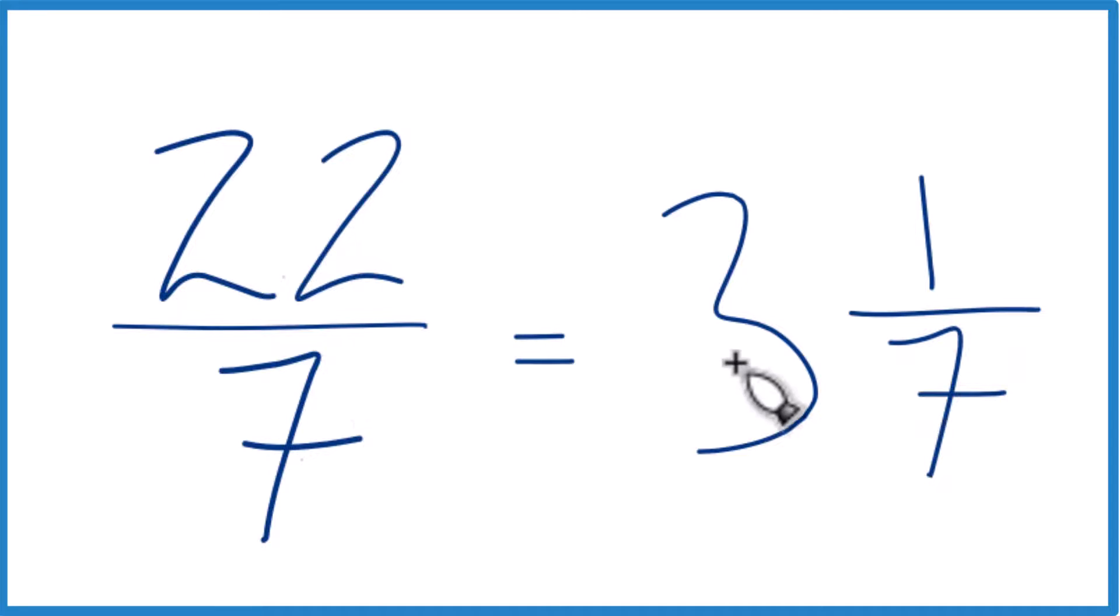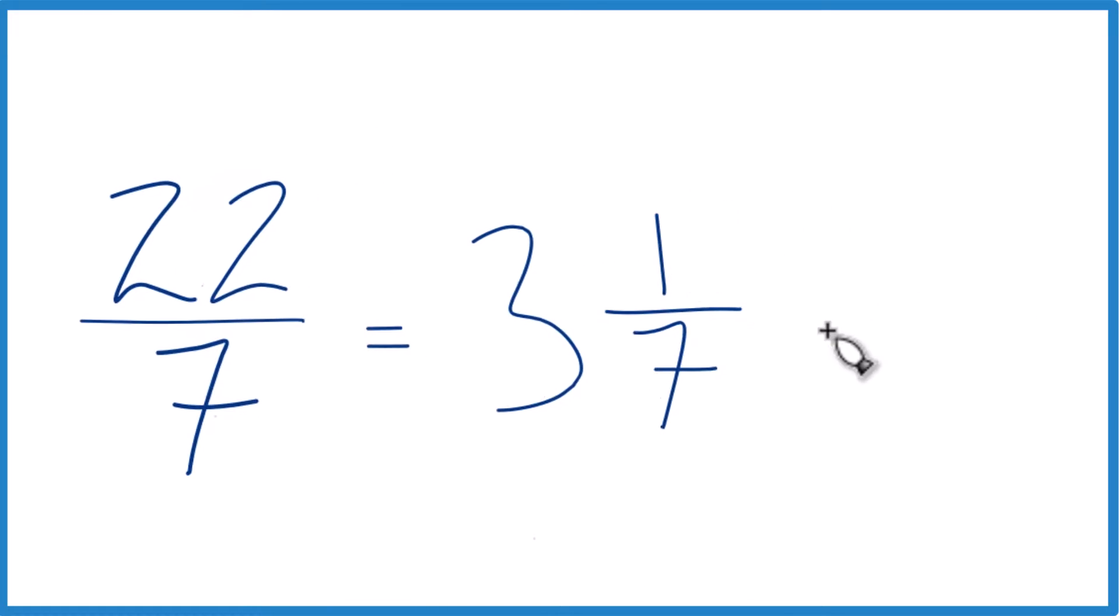Then we just bring the 7 across, and that's the mixed number. 22 sevenths equals 3 and 1 seventh as a mixed number. We can check that, too. 3 times 7 is 21. 21 plus 1 is 22. Then we just bring the 7 across. That's what we started with.